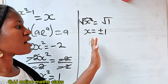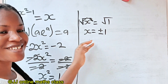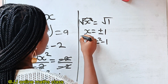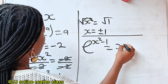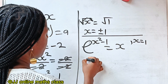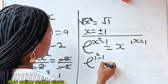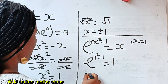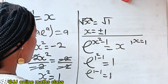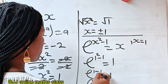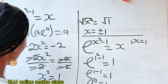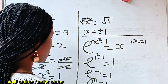Let's prove that the answer we got is correct. The equation says e to the power of x squared minus 1 is equal to x. When x equals 1, we have e to the power of 1 squared minus 1 equal to 1. So e to the power of 1 minus 1, which is 0, is equal to 1. Any number to the power of 0 is 1, so 1 equals 1. This is correct.